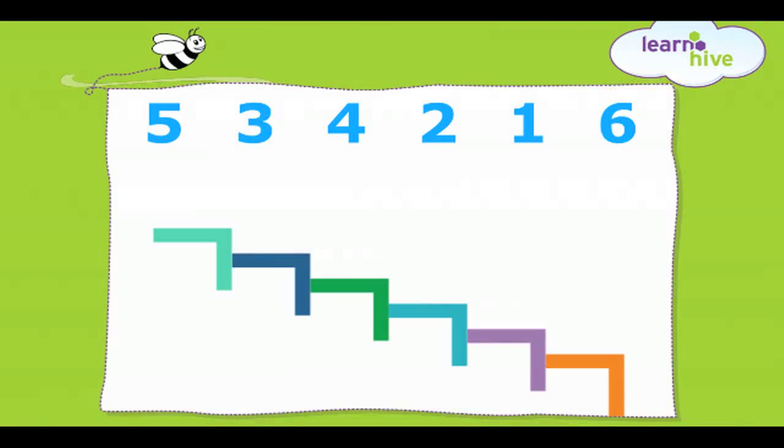Now here are six numbers which are given in jumbled order. Five, three, four, two, one, six. Can you put them in descending order by labeling the steps correctly?